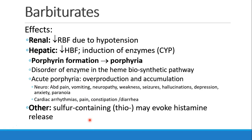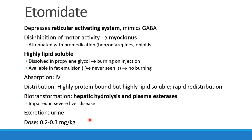Also, thiobarbiturates may evoke histamine release. Moving on to our next IV drug, etomidate. Etomidate depresses the reticular activating system, that consciousness center in the brainstem, and it also mimics GABA, the inhibitory neurotransmitter.